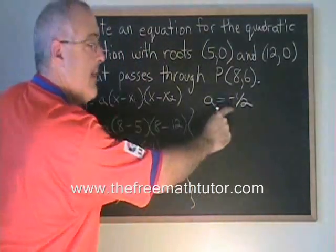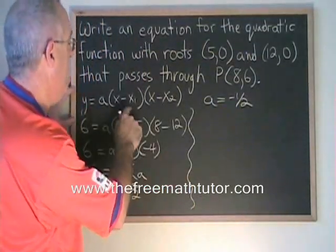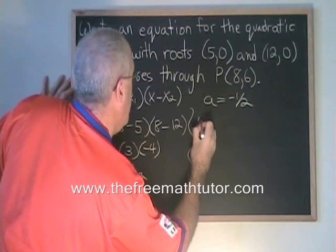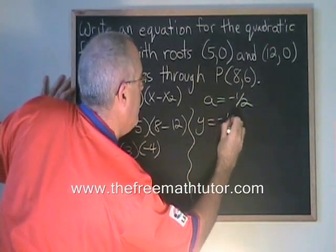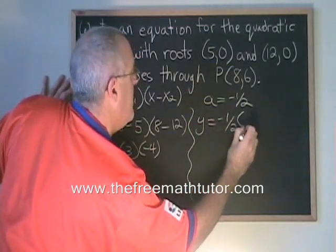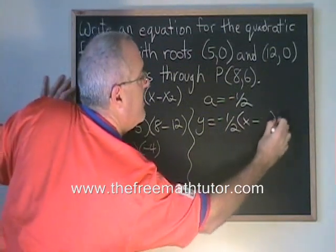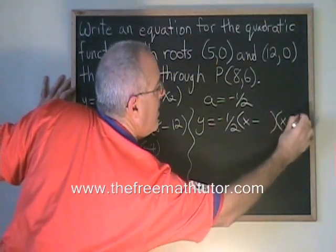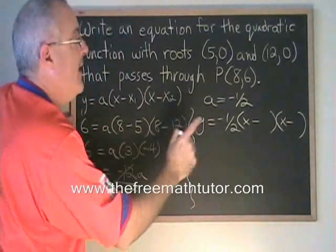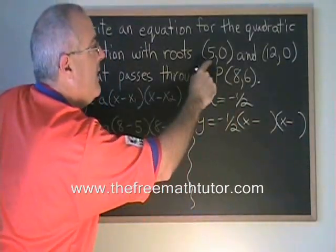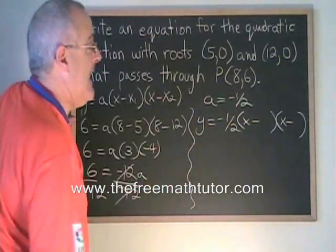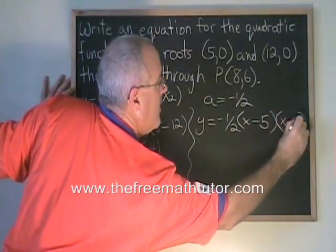Plugging this a value into the same form of the equation, we get y equals negative 1/2 times (x minus...). And then we use the x-coordinates of the zeros again, 5 and 12.